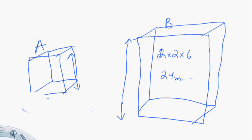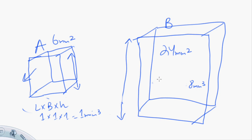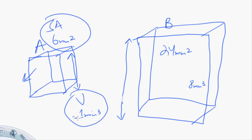So for cell A, the surface area is 6 mm². For cell B, the surface area is 24 mm². Now for volume: the formula is length × breadth × height. The volume of cell A is 1 × 1 × 1 = 1 mm³, and the volume of cell B is 2 × 2 × 2 = 8 mm³.